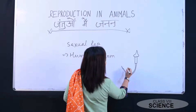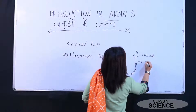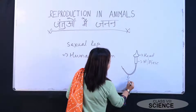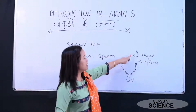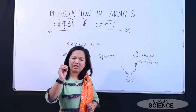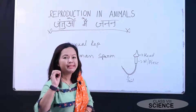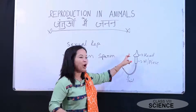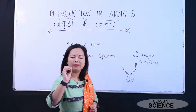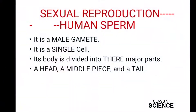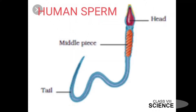The body of the sperm is divided into three parts: the head, the middle piece, and the tail. The head is pointed and the tail helps in constant and easy movement of the sperm in the semen. The structure of the head and the tail helps in easy movement and penetration of the sperm.